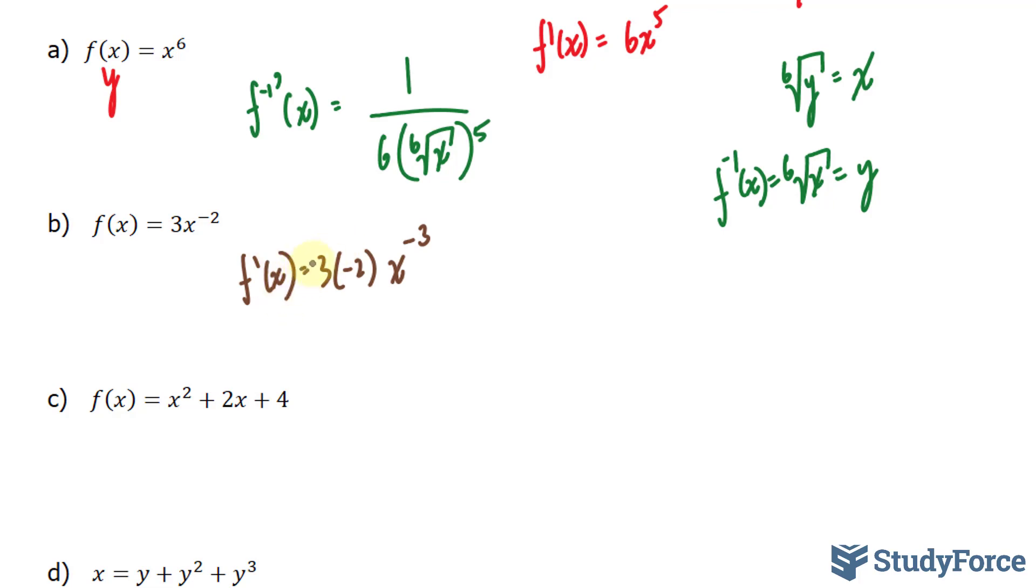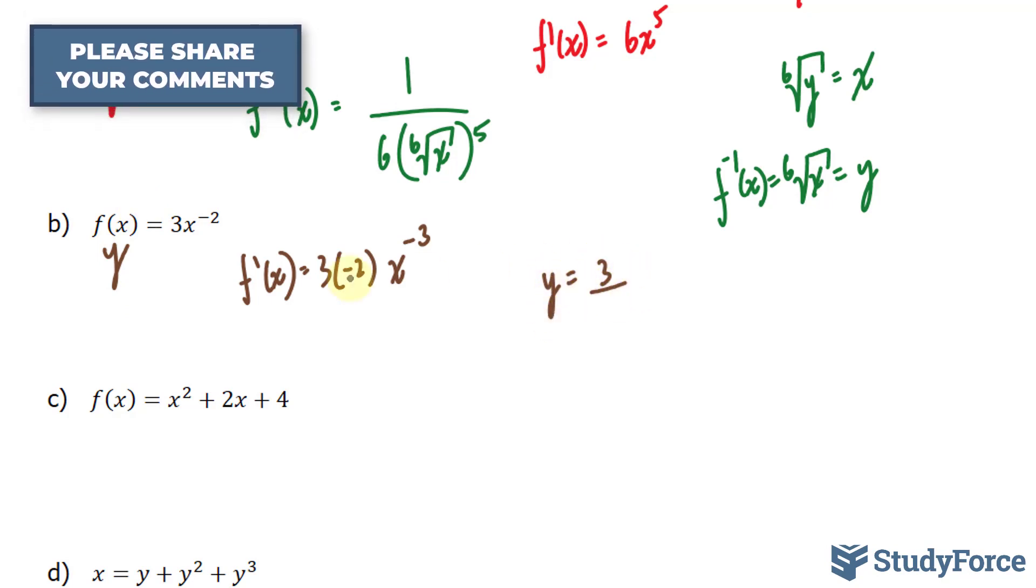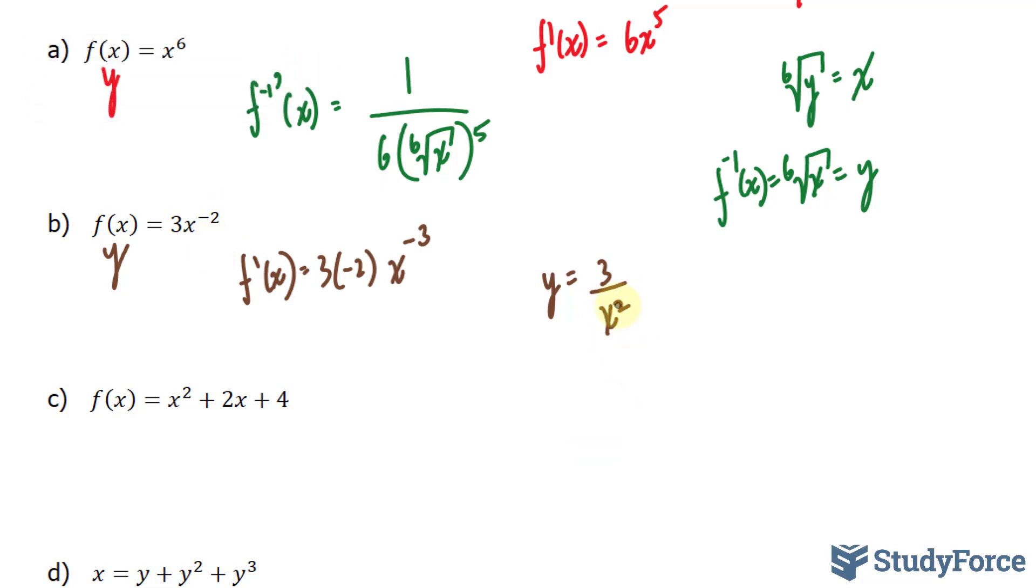Now we can find the inverse. I'll set this equal to y. So I have y is equal to 3. And at the bottom, instead of writing x to the power of negative 2, I can write down x to the power of 2. That's the negative exponent rule.